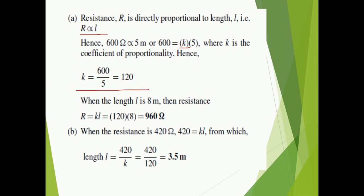The proportionality constant will have the same value for the same material of the conductor. We need to calculate the value of resistance when length is 8 meters. So R is equal to KL, which comes out to be 960 ohm.